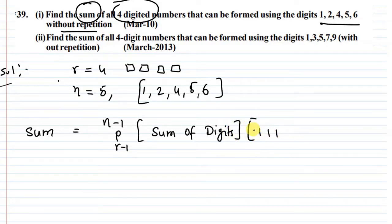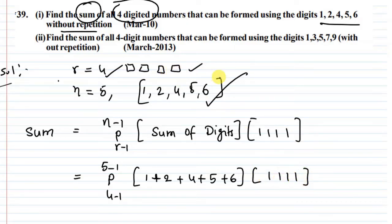The pattern is 1111 for 4-digit positions. How is R value 4? For 4-digit numbers, R equals 4. The formula is R minus 1 P R minus 1. Sum of the digits: 1 plus 2 plus 4 plus 5 plus 6 equals 18.